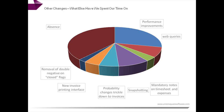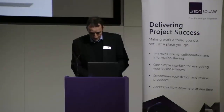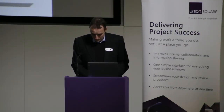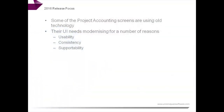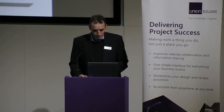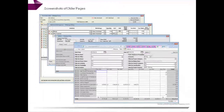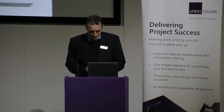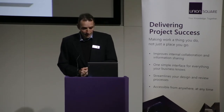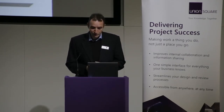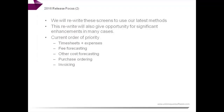Roughly half the year was spent on the resource planner; a big chunk of what was left went on absence. We spent a lot of time making everything faster — the bands are all faster. We're also doing standard web queries, and the double negative fix is important this year. Looking ahead, some of our screens use very old technology and need to be modernized. This will also improve usability and consistency. Timesheets, expenses, fee forecasting, non-labour cost forecasting, and the fee grid page are all in line for a refresh, working down a priority list.